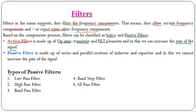Passive filters are made up of series and parallel sections of inductors, capacitors, and resistors, and we cannot increase the gain of the signal. This is the main difference: using an active filter we can increase the gain because the gain is given by RF over R1, so we can adjust the gain accordingly, whereas in the passive filter such provision is not there.